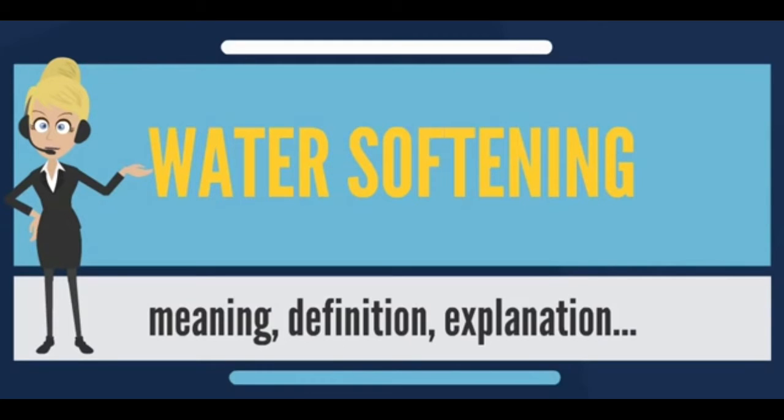The most common means for removing water hardness rely on ion exchange resin or reverse osmosis. Other approaches include precipitation methods and sequestration by the addition of chelating agents.